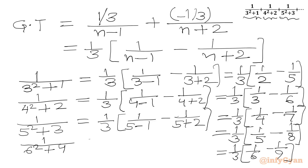Now we add all the terms to calculate S. Cancellations occur: -1/5 cancels with +1/5, -1/6 cancels with +1/6, -1/7 cancels with +1/7, -1/8 cancels with +1/8, -1/9 cancels with +1/9, and so on. So only the first three surviving terms remain: 1/2, 1/3, and 1/4.